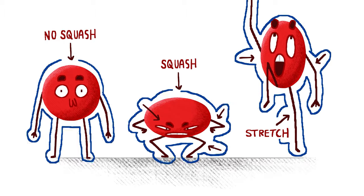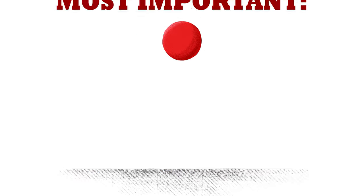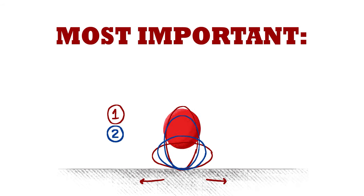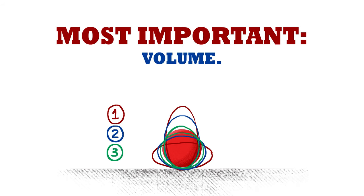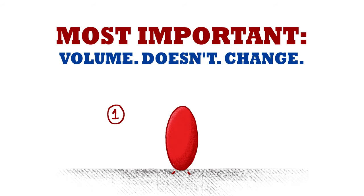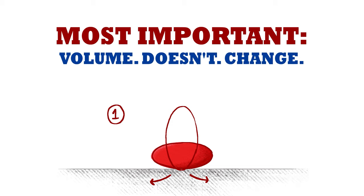This is true whether for a subject's entire form or for something more nuanced like a character's face. The most important rule to remember when squashing and stretching your subject is that their volume doesn't change. If a subject is stretching taller, it should compensate by becoming narrower. If the subject is squashing to become shorter, it should compensate by becoming wider.